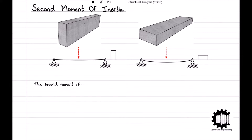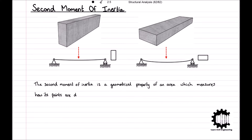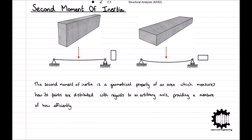The second moment of inertia is a geometrical property of an area which measures how its points are distributed with regards to an arbitrary axis, and provides a measure of how efficiently the cross-sectional shape can resist bending caused by loading.